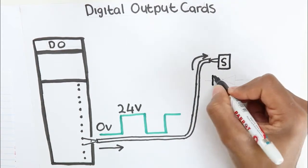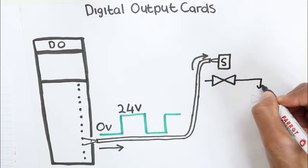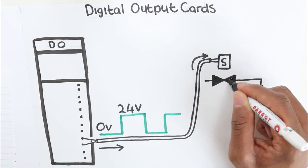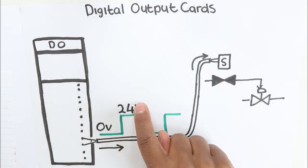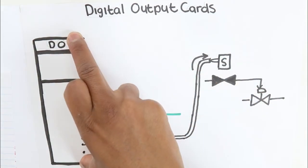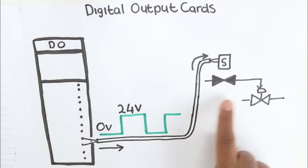The common example where this is used is in the control of solenoid valves. If the program wants the valve to open, it will send a 24 volt signal to the valve via the digital output card.